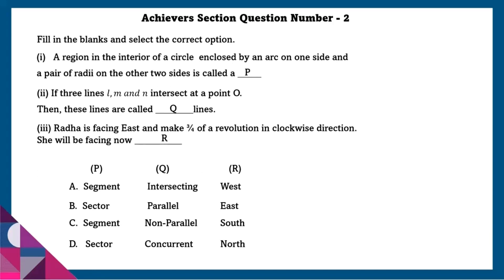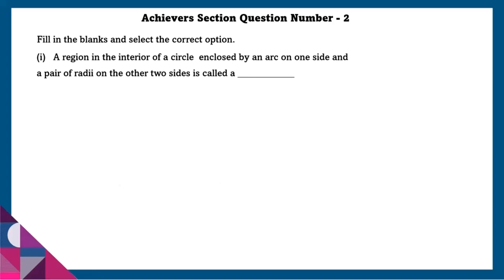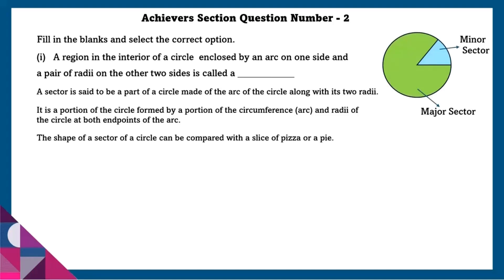Achiever section question number 2: Fill in the blanks and select the correct option. A region in the interior of a circle enclosed by an arc on one side and a pair of radii on the other side is called a sector. A sector is a part of a circle made of an arc along with its two radii — a portion of the circle formed by a portion of the circumference and radii at both endpoints of the arc. The shape of a sector can be compared with a slice of pizza or a pie. So P is equal to sector.